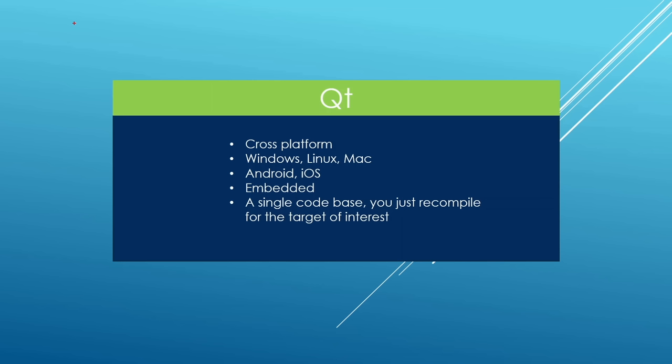Qt is a cross-platform application development framework. You can use it to write applications for Windows, Mac, Linux, Android, iOS, and even embedded devices. The way Qt works, you write your code once and recompile it for your target platform. For example, if you write your application on Windows and want to generate a Linux binary, you recompile your code on a Linux machine.